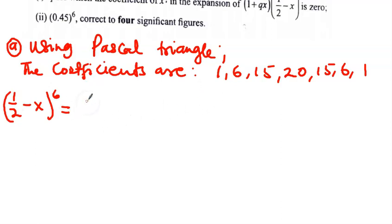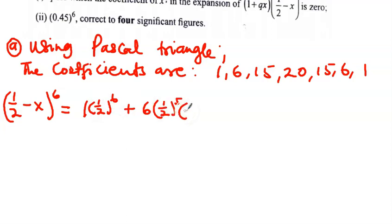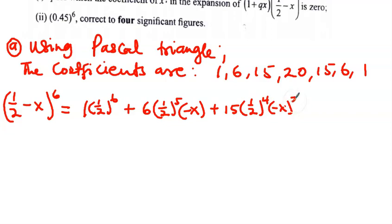The first coefficient is 1, so we have 1 times (1/2)^6. Then the second term: 6 times (1/2)^5 times (-x)^1. Then plus 15 times (1/2)^4 times (-x)^2.